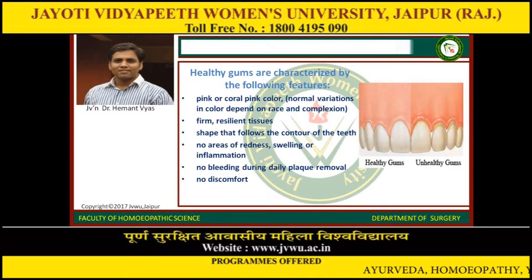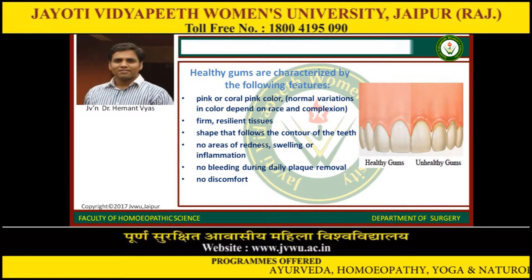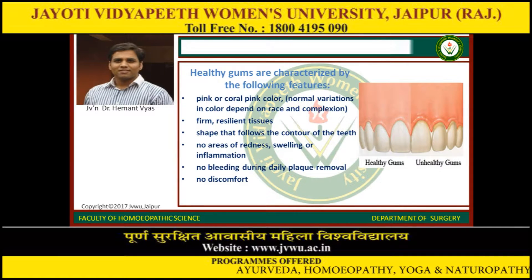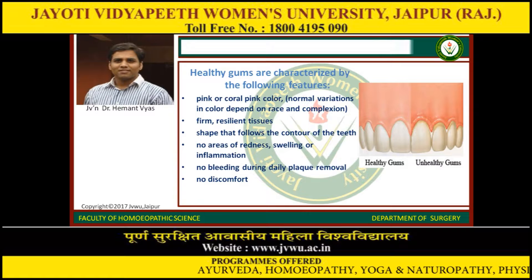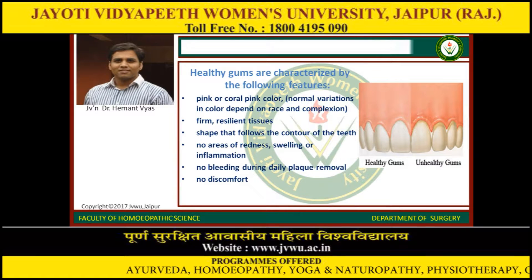Let's see the difference between a healthy gum and a diseased gum. Healthy gums are pink or coral pink in color. They are firm, resilient tissues with a shape that follows the contour of the teeth. There is no redness, swelling, or inflammation, no bleeding during daily plaque removal or brushing, and no discomfort. In the normal state, there is no consciousness of our gums. If the gums become unhealthy, there is a feeling of unhealthiness in the gums.